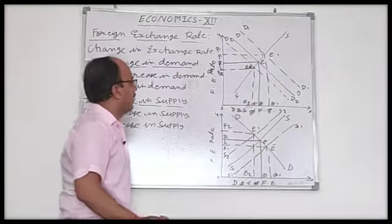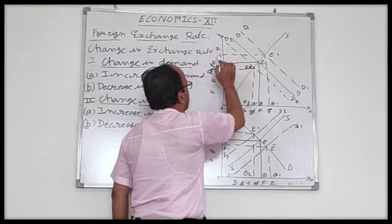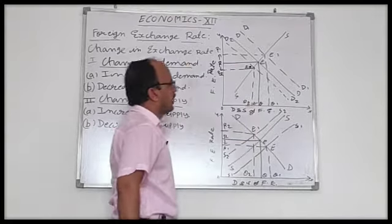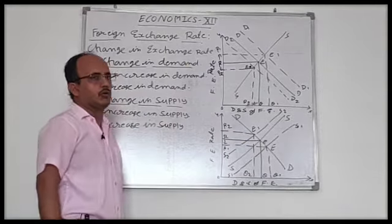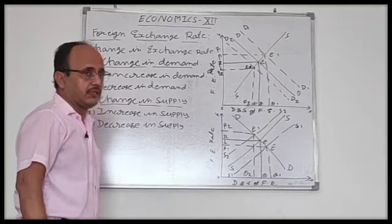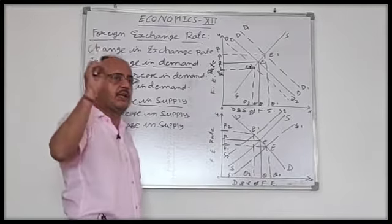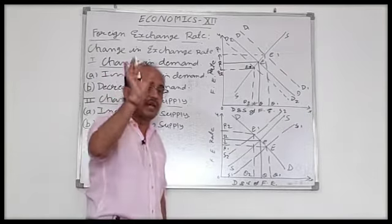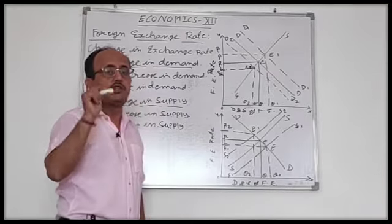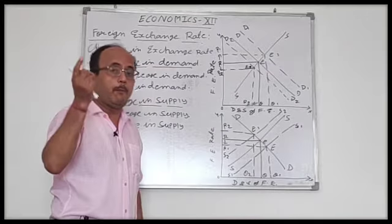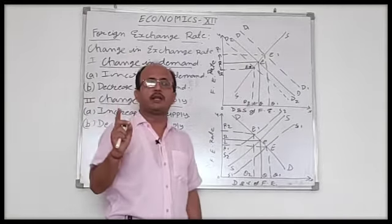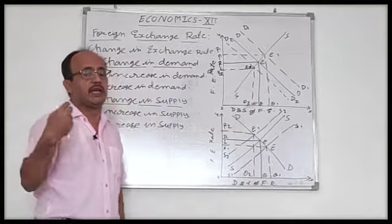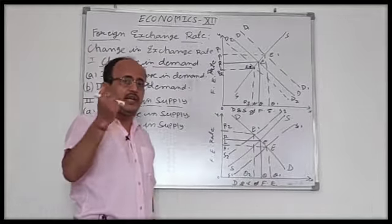Now D1D1 intersects the SS supply curve at a new point E1. At this point, the foreign exchange rate is now OR1 and its equilibrium quantity is OQ1. The foreign exchange rate has increased. This shows the appreciation of the foreign currency — the dollar — and depreciation of the Indian currency, the rupee.